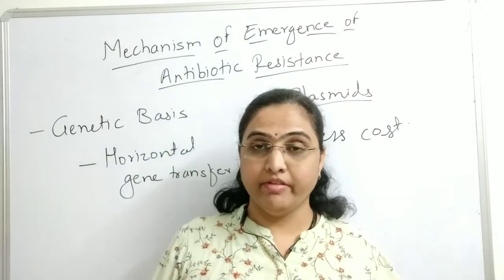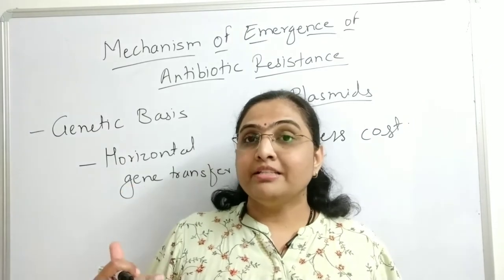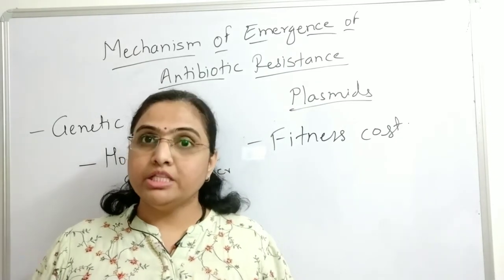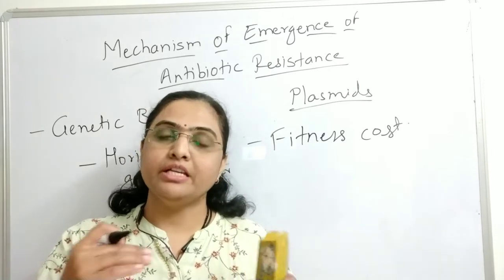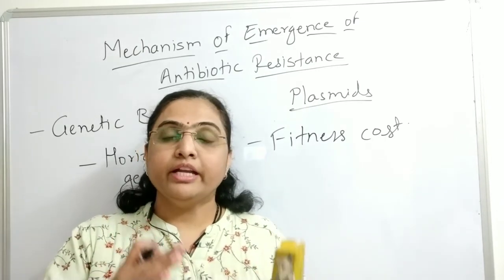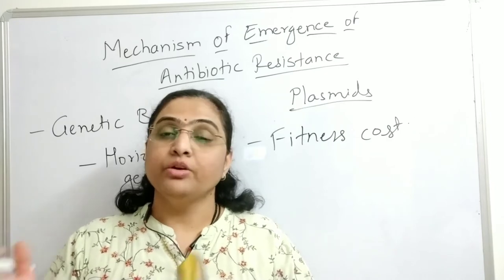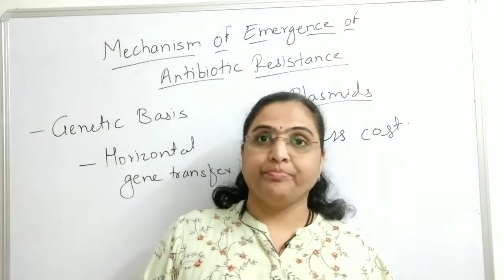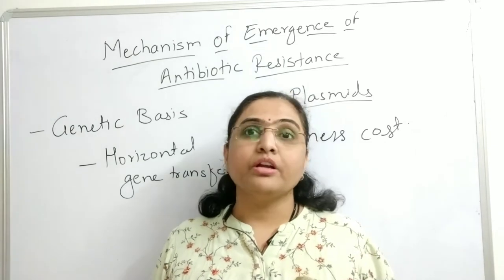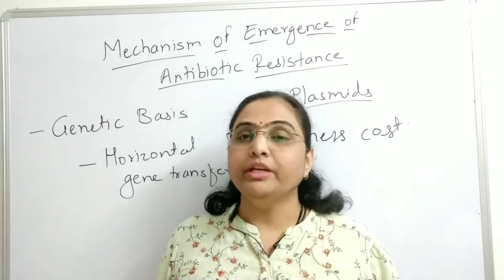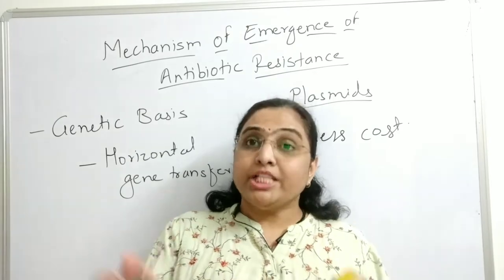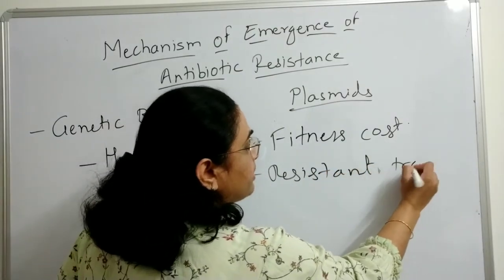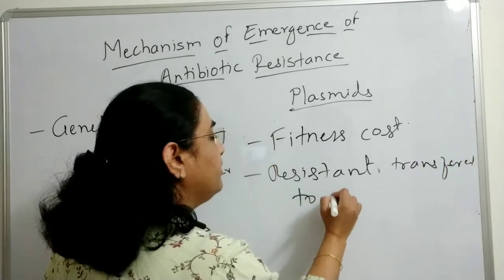When antibiotic returns to the environment, the bacterial cells bearing the antibiotic resistance gene outnumber the susceptible ones. So whenever antibiotic is present, resistant bacteria outnumber susceptible ones, and when absent, susceptible bacteria outnumber resistant ones. Next, the resistance gene can be transferred to the bacterial chromosome.